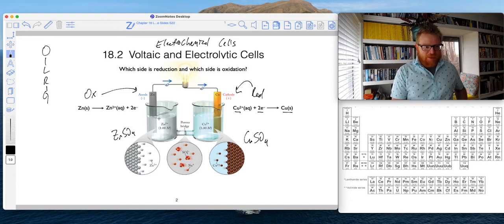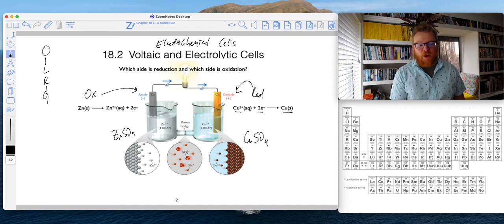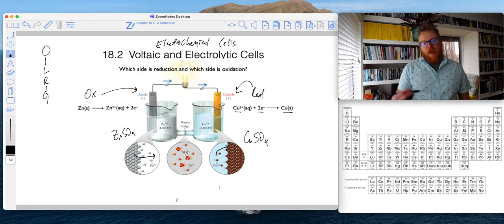Similarly, in the anode, when electrons leave the anode, then zinc ions leave that metal rod. You can see that in the picture right here: zinc ions leaving the anode, and copper ions precipitating on the cathode.